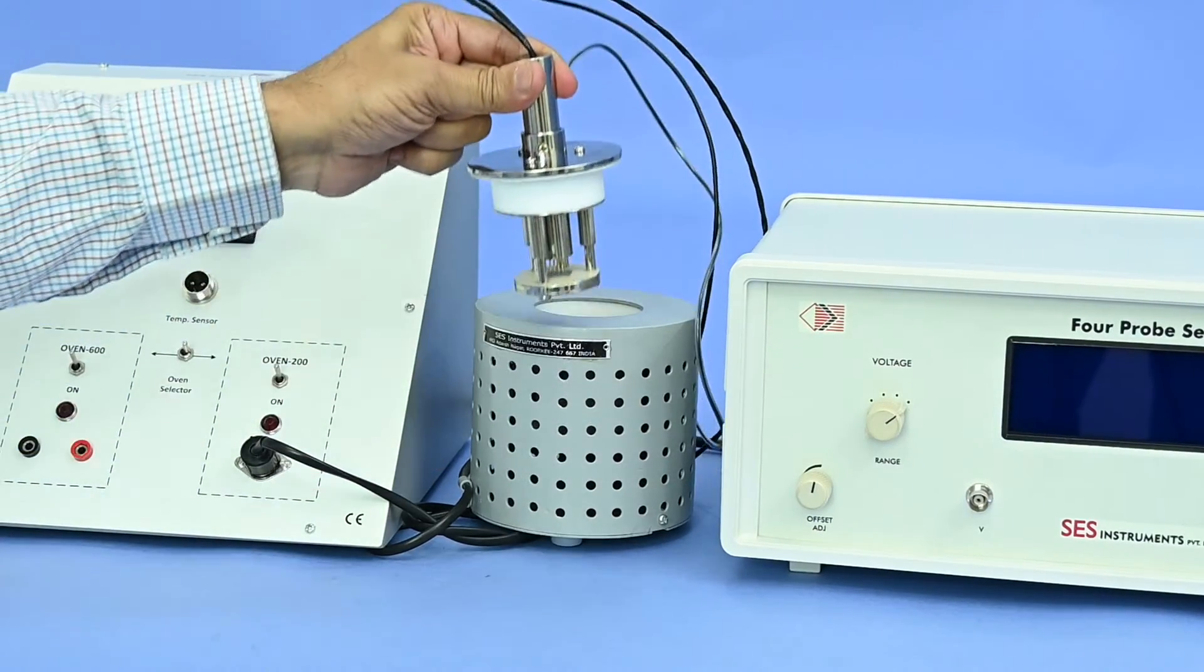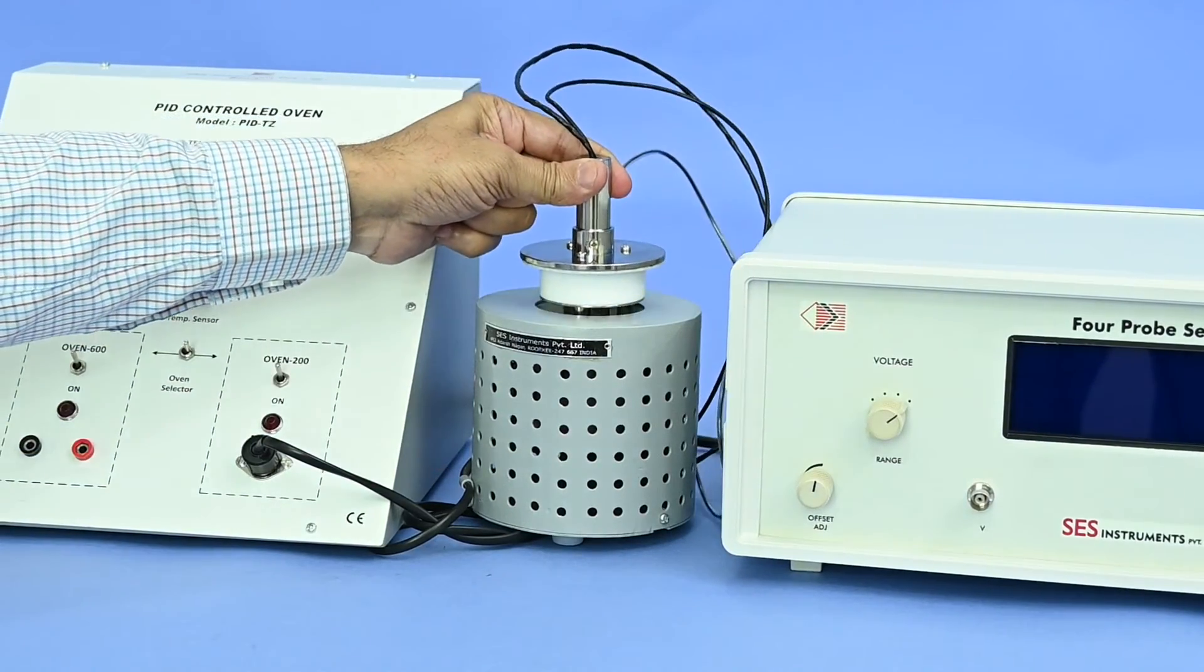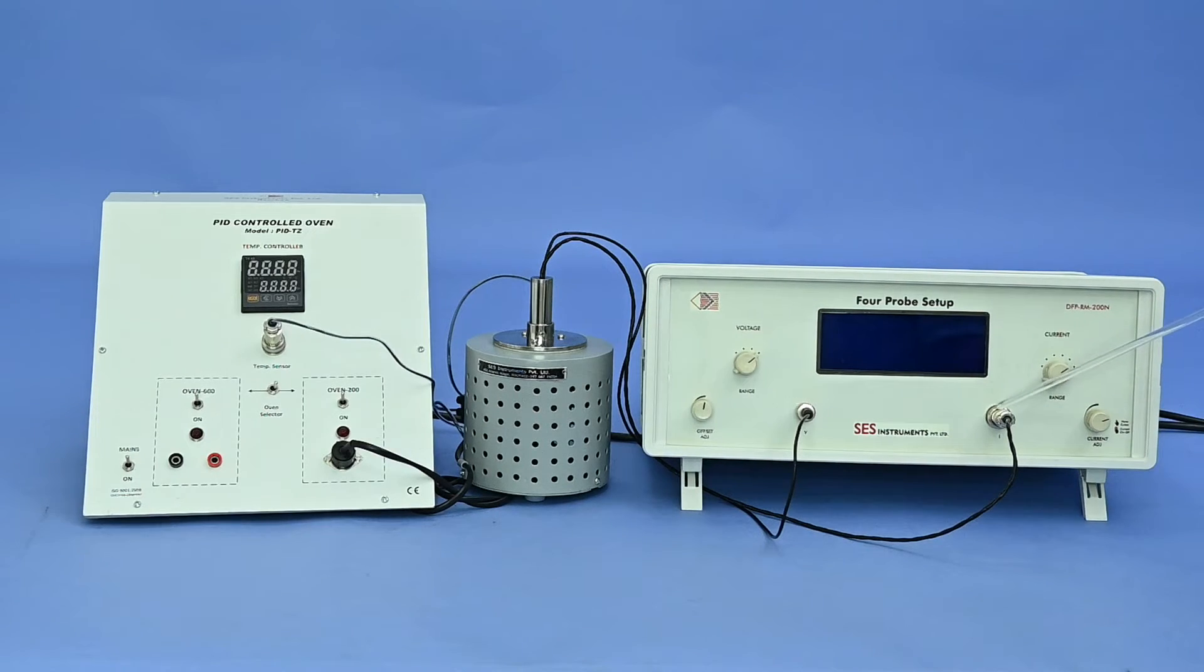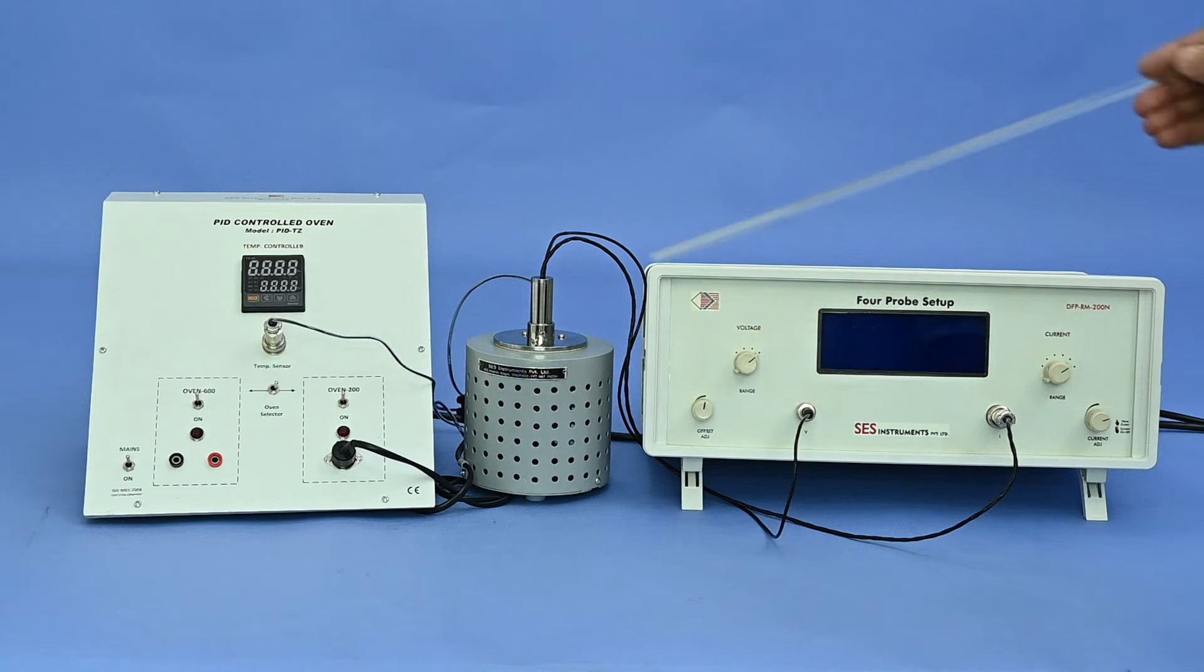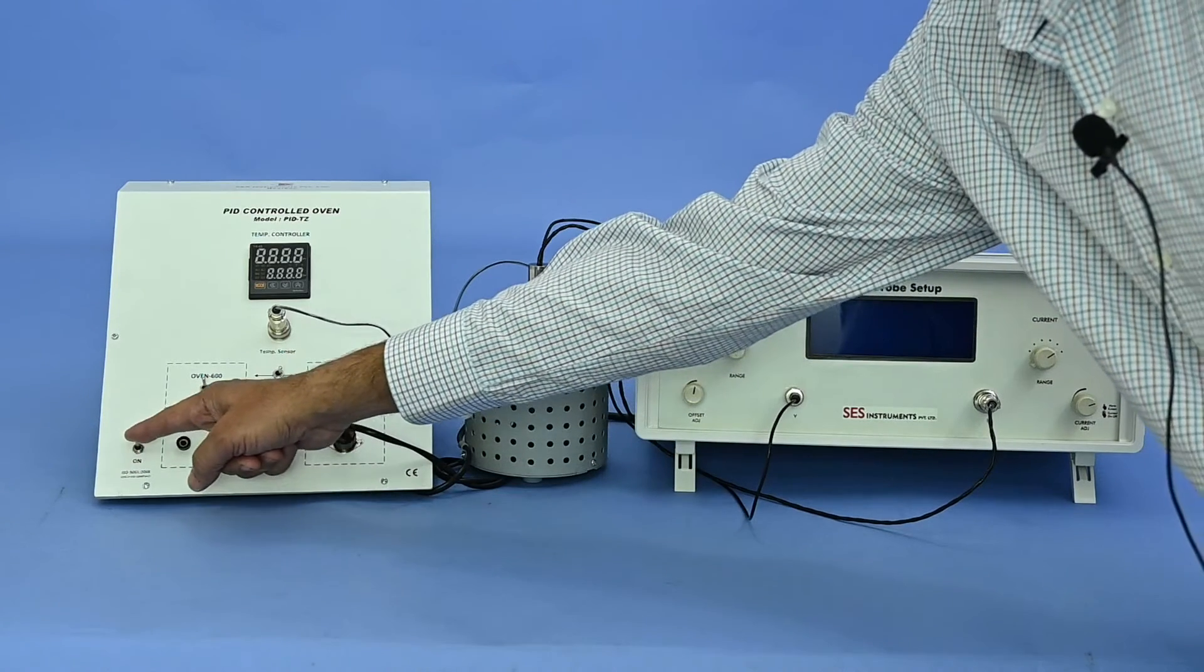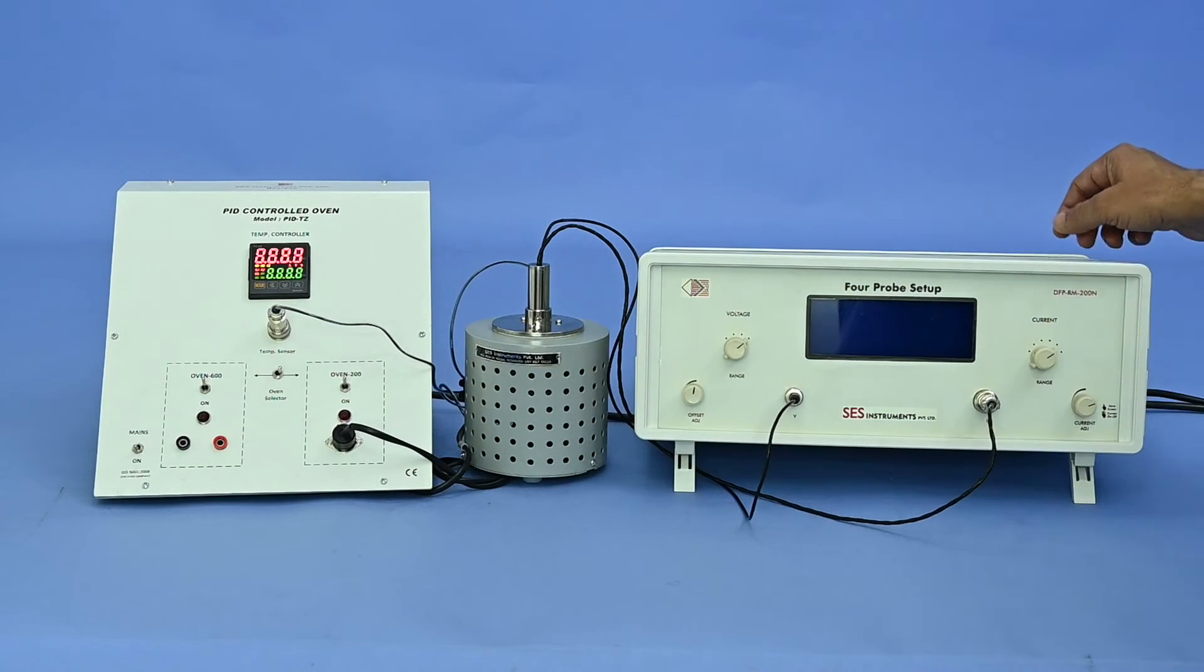Put this arrangement inside the oven. Connect the current, voltage, and temperature connectors to their suitable sockets. Switch on the PID controller and four probe setup.